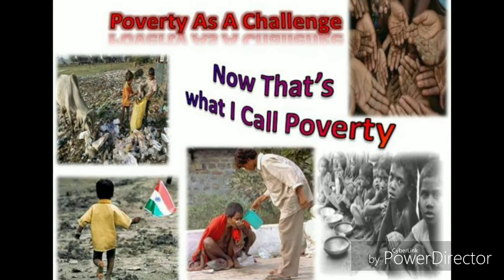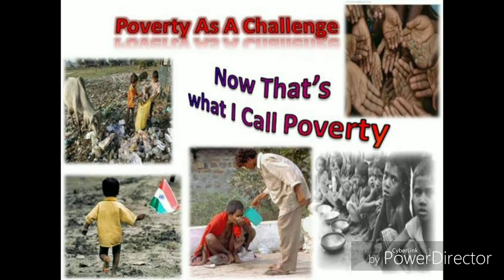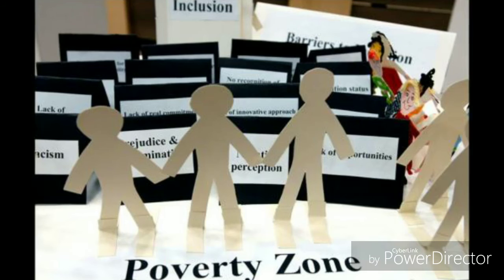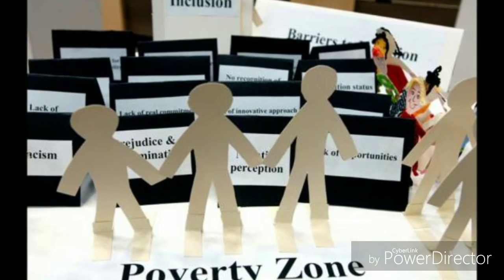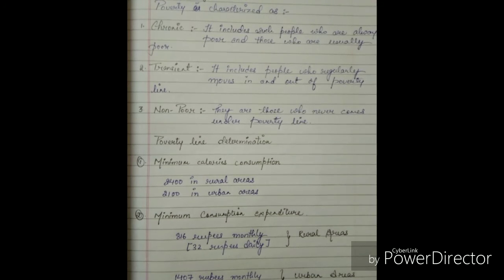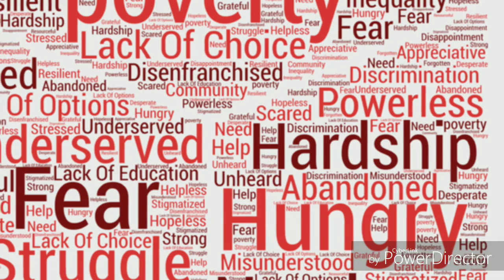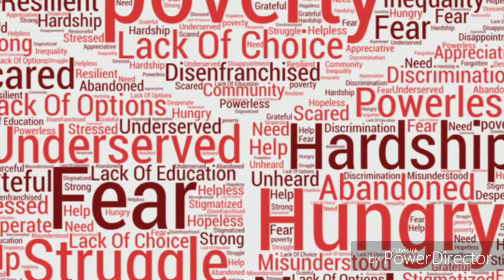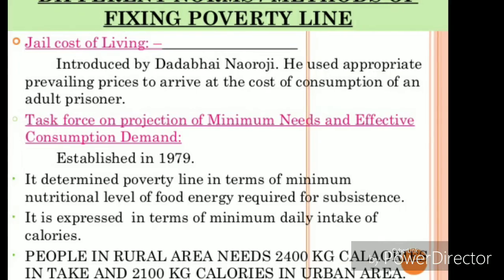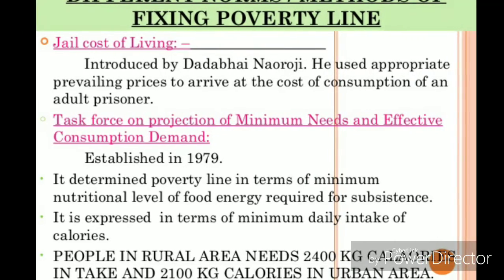The first method is minimum calorie consumption. People living in rural areas must consume 2400 calories, and people in urban areas must consume at least 2100 calories per day. If a person in a rural area consumes less than 2400 calories, they are below poverty line. The minimum calorie requirement is 2400 for rural areas and 2100 for urban areas.